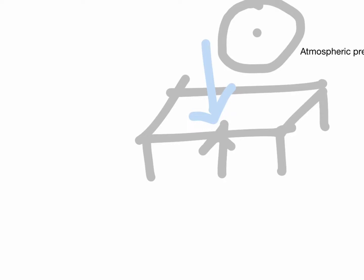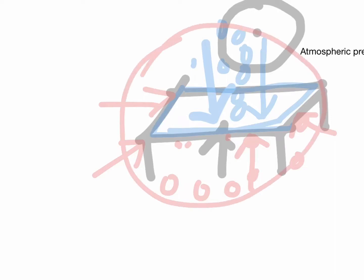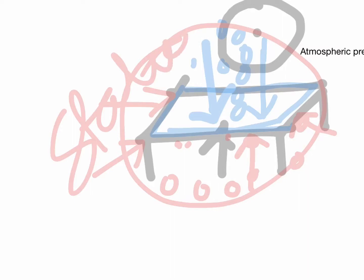Imagine a table — there are air molecules above the table, but there are also molecules below the surface of the table. Molecules are everywhere. So the atmospheric pressure is felt from every direction. We call this static pressure — the pressure due to the static molecules of air.